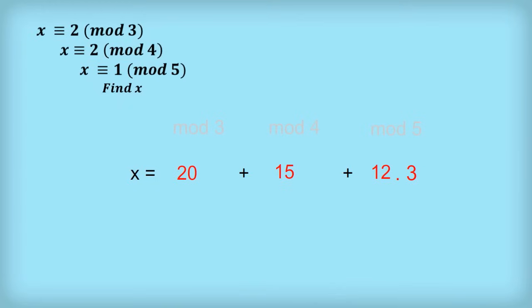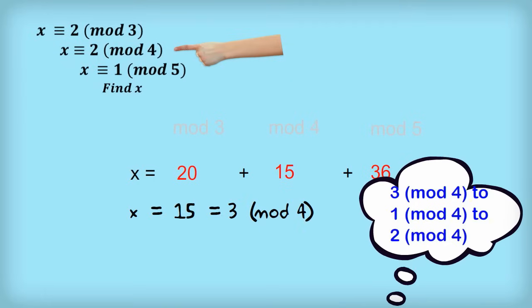Finally, we need to make sure that x ≡ 2 (mod 4). Currently, x equals 15 mod 4, which is the same as 3 mod 4. I suggest doing this in two stages. First, go from 3 mod 4 to 1 mod 4, then from 1 mod 4 to 2 mod 4.